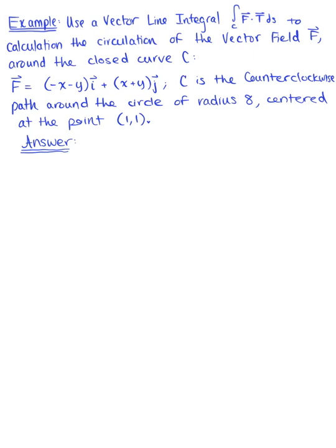Use a vector line integral to calculate the circulation of the vector field F around the closed curve C. The vector field is defined by the components (-x - y) î + (x + y) ĵ. The closed curve C is the counterclockwise path around the circle of radius 8 centered at the point (1, 1).